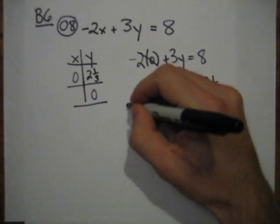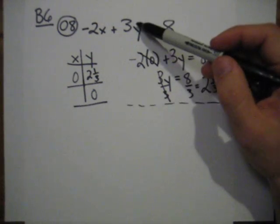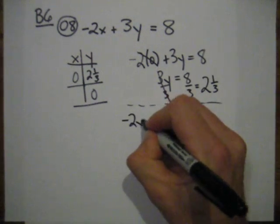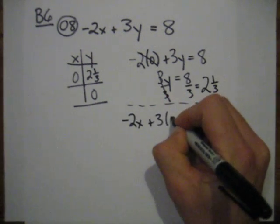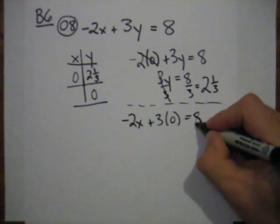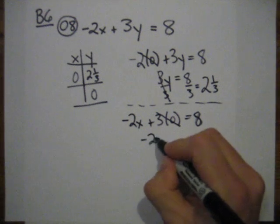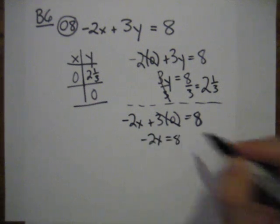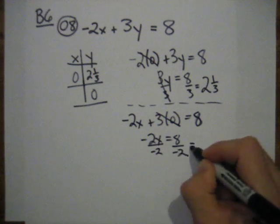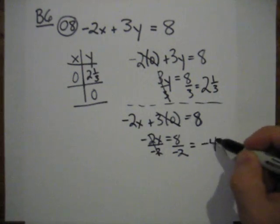Okay, now I'm going to do the same thing for y. I'm going to plug 0 in for y and find x. So I get that, and that's an 8. 3 times 0 is 0. I'm left with negative 2x equals 8, divide by negative 2. And I get 8 divided by negative 2, negative 4.